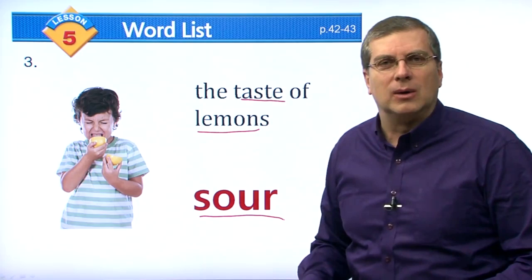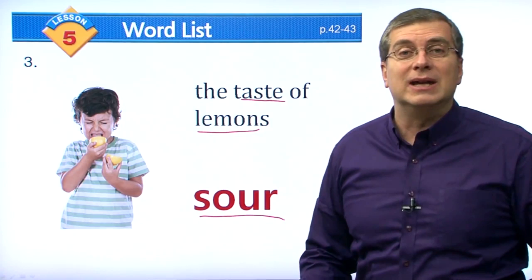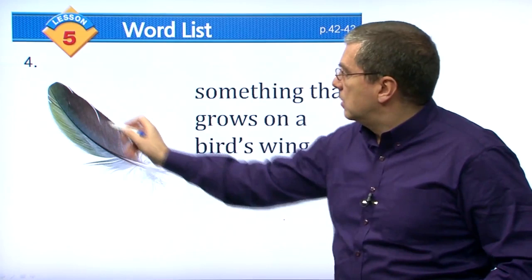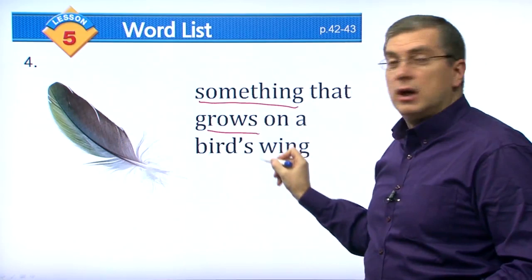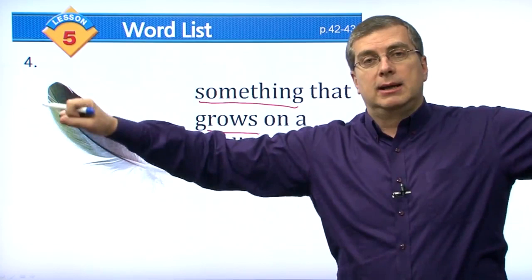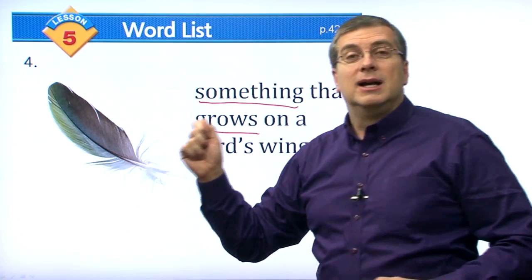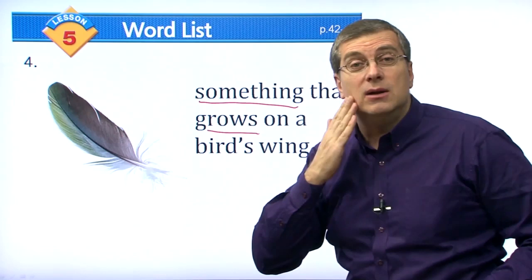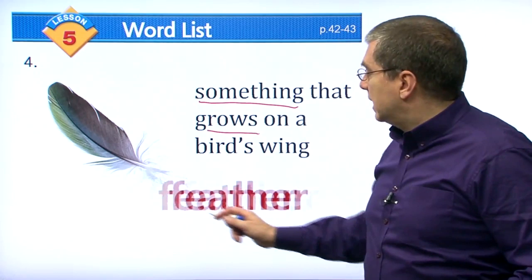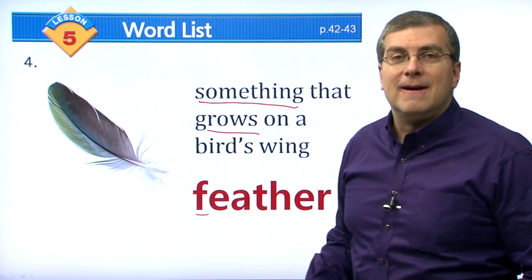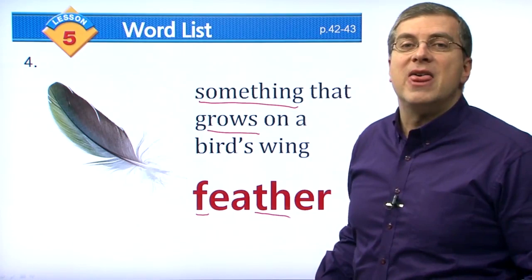Here we have another word — this object grows on a bird's wing, and all over its body. It looks like this — it's very soft. If you take this and brush it against your cheek, you can use your cheek to feel. It's very soft. What is it? Of course, it is a feather. Be careful with the F — feather. It grows on a bird's wing and it's very soft if we touch it.